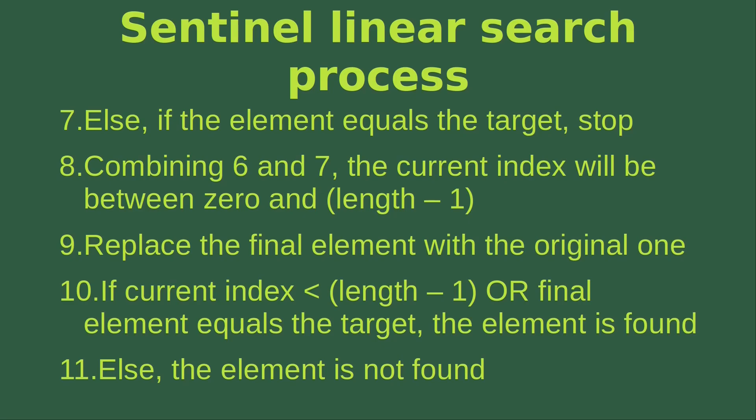By combining steps six and seven, the current index where we stop would be between zero and the length minus one. At this stage, we replace the final element with the original one we saved earlier. Then we check: if the current index is less than the length minus one, or if the final element equals the target, then the element is found. Otherwise, the element is not found.